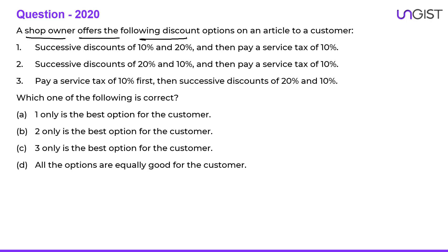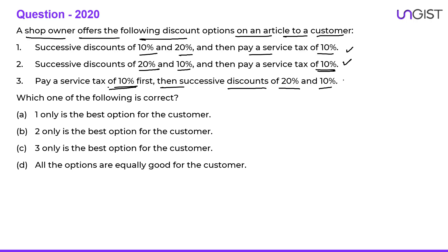First question: A shop owner offers discount options on an article — successive discount of 10% then 20%, or 20% then 10%, with a service tax of 10% applied in different orders. For successive discounts, the order does not matter. So all the options are equally good for the customer. Option D — all options are equally good — is the correct choice.